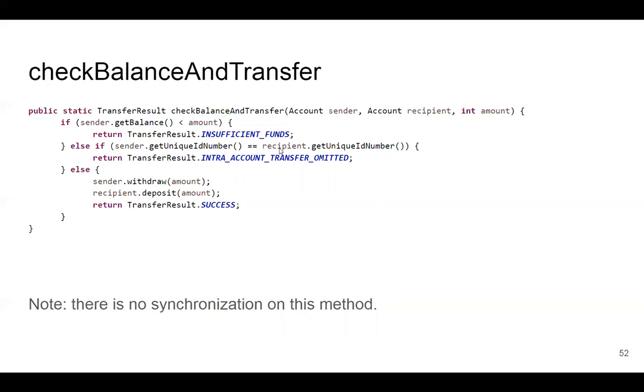It sees if the sender has enough money. If the sender doesn't have money, it returns insufficient funds. If the sender and recipient are the same, it will say intra-account transfer omitted. Otherwise, it will withdraw money from the sender and deposit it in the recipient and return success. There is no synchronization in this method. There's nothing to prevent this from having a data race if you call this from multiple tasks.